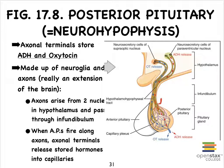When do they get released? When action potentials propagate down the axons, it triggers the release of the hormones, just like neurotransmitters are released. We can't truly refer to oxytocin and ADH as neurotransmitters here, because they end up in this capillary bed — referred to as the capillary plexus — and not on a postsynaptic membrane.